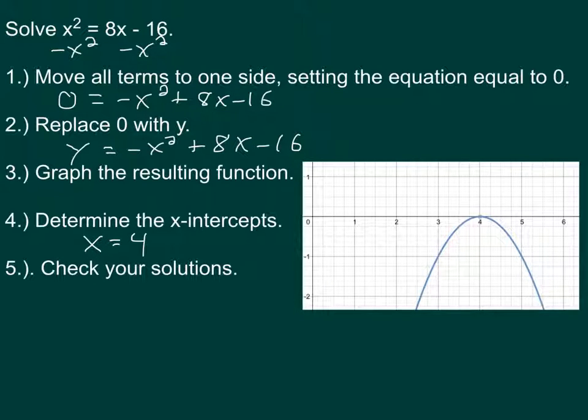So if we check this and plug that into our equation, that should work. So I'm going to check it by doing 4 squared equals 8 times 4 minus 16. 4 squared is 16. 8 times 4 is 32. And 32 minus 16 is, in fact, 16. So 4 is a solution. And it turns out this is a parabola that only has one solution.